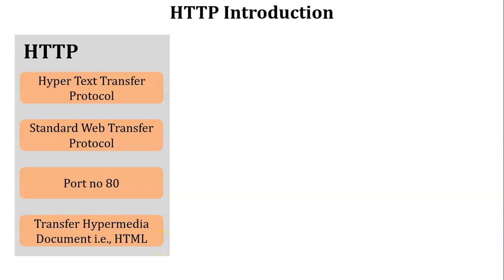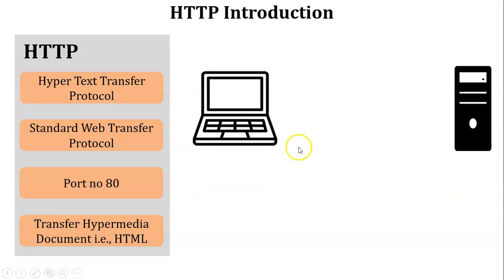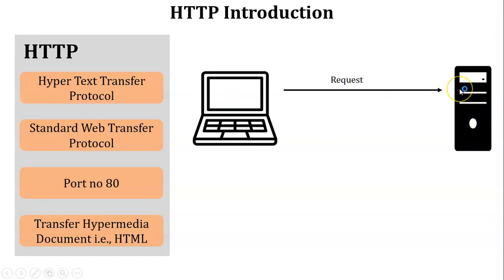The working of HTTP is based on request-response behavior. For example, there is one client and one server. The client wants to access a file from the server, so the client makes a request to the server for a particular file. The server reads the request and sends the requested file back to the client — this is called the response. This is known as request-response behavior.